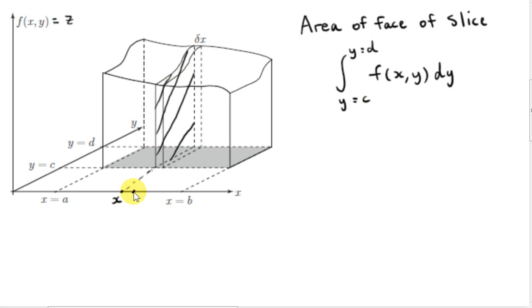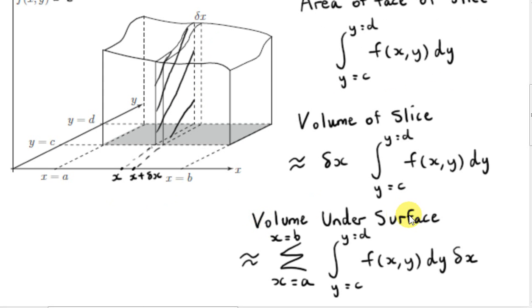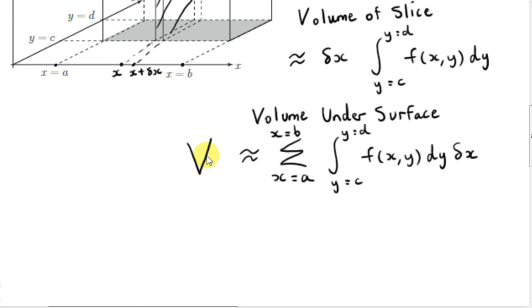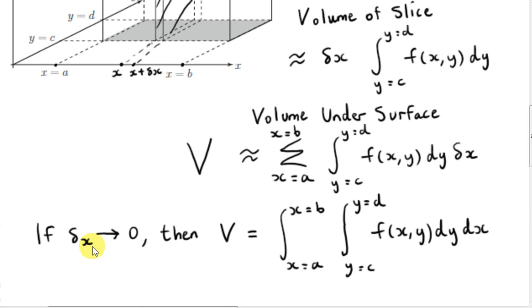We multiply that area by delta x to get an approximation to the volume of this slice, so the thickness is delta x and this point is x plus delta x. To get an approximation to the volume under the surface, we sum all these slices for each value of x, running from a to b. Now the exact volume v is approximated by summing all these slices. If we let the thickness delta x become infinitesimally small, we replace delta x with dx, and the summation sign with an integral sign from x equals a to x equals b.